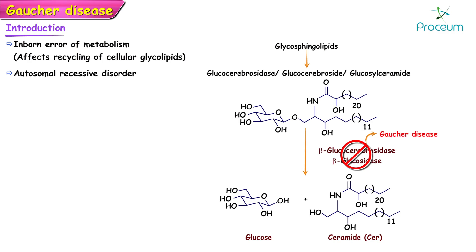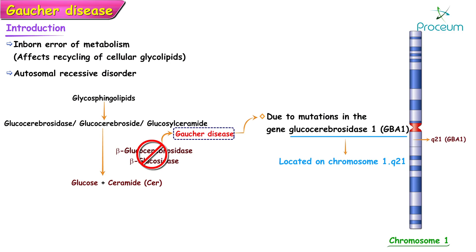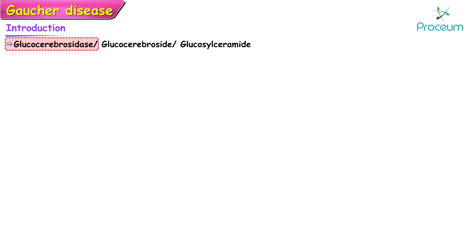a deficiency of the enzyme acid beta-glucosidase, which is more popularly known as beta-glucocerebrosidase. It occurs due to mutations in the gene glucocerebrosidase type 1, abbreviated as GBA1, which is located on the long arm of chromosome number one, locus 21.